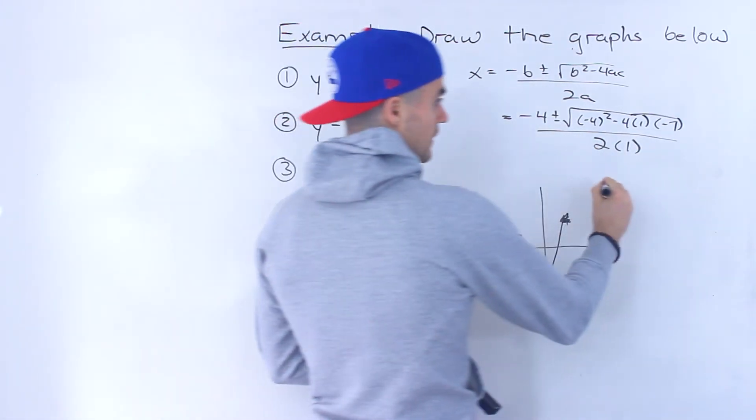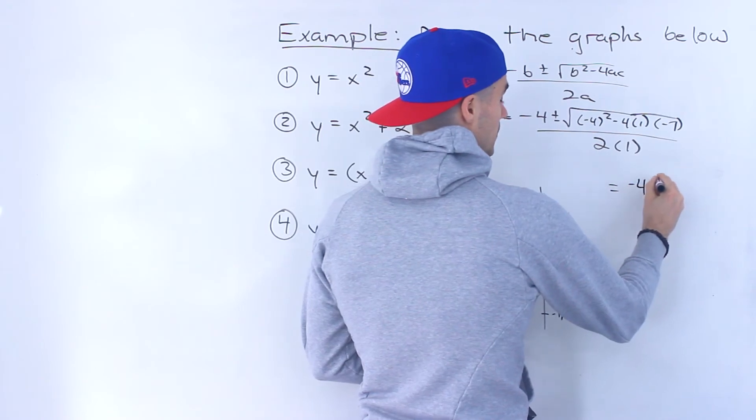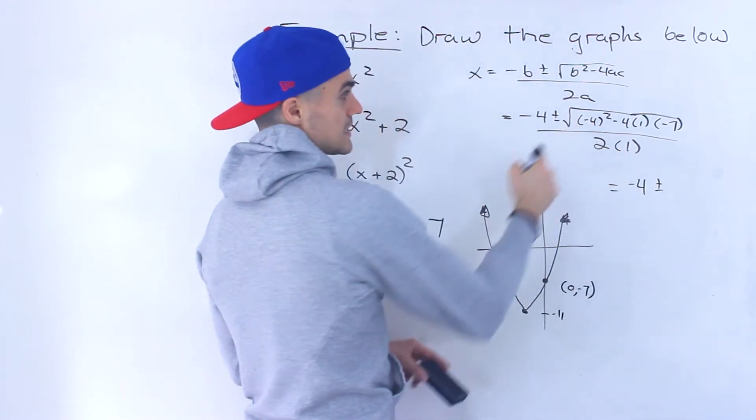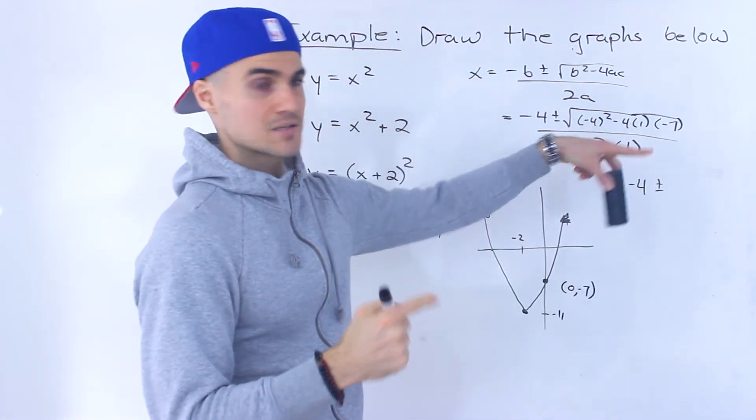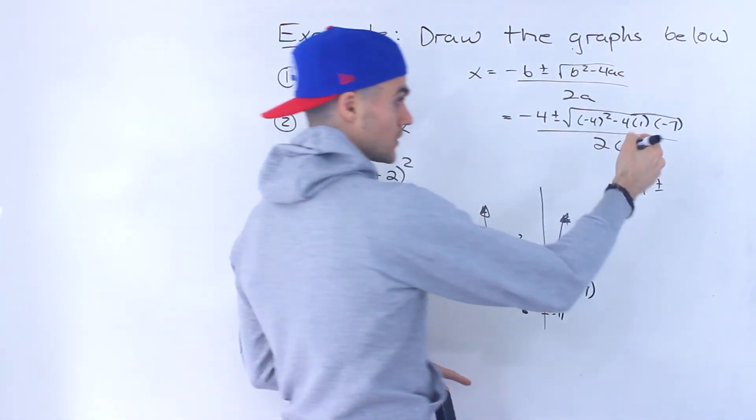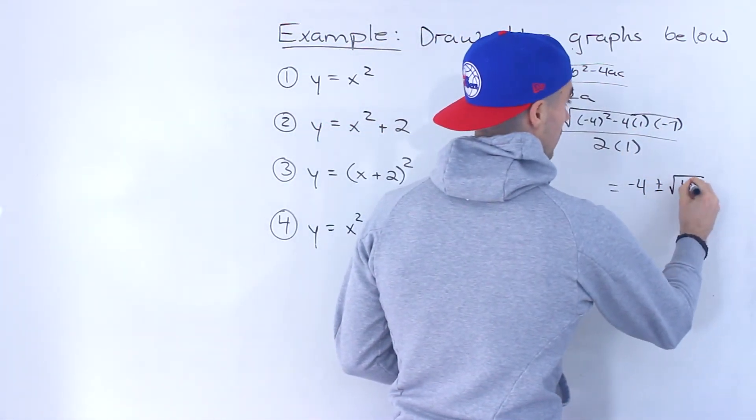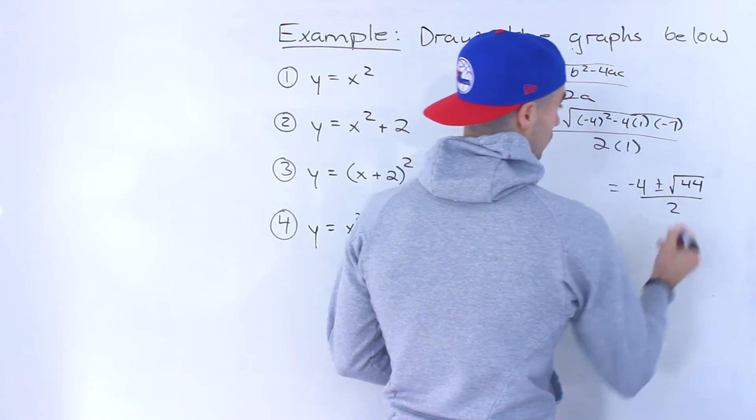And so this would simplify to what? We'd have negative 4 plus or minus, this would be 16, negative 4 times negative 7 is positive 28, so we'd have 16 plus 28, which would give us 44, and then this would be all over 2.